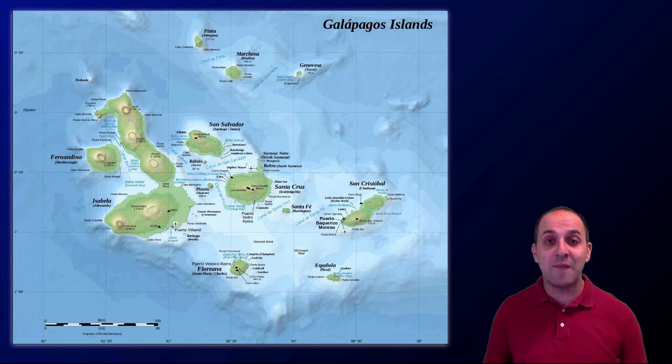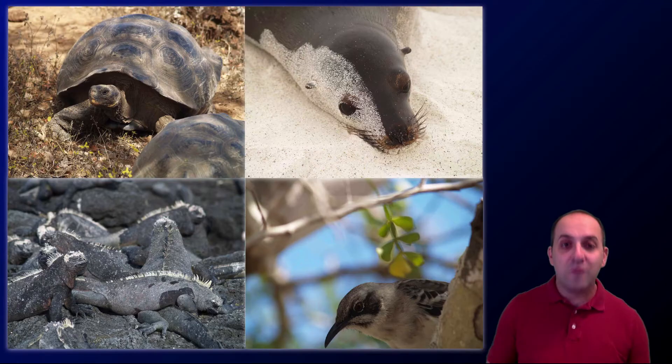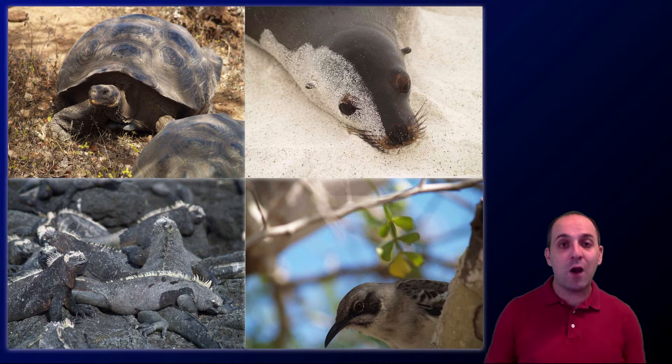One particularly important location for the development of Darwin's evolutionary theory was the ship's stop in the Galapagos Islands off the coast of Ecuador in South America. The Galapagos are a volcanic archipelago inhabited by many unique species found nowhere else in the world — giant tortoises, marine iguanas, and species of birds exclusive to that archipelago. This turned out to be really important for Darwin's thinking about natural selection.